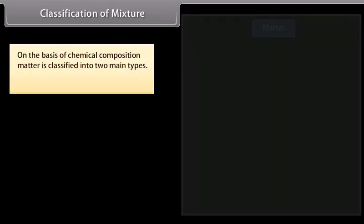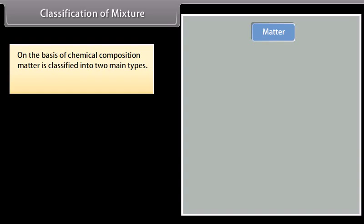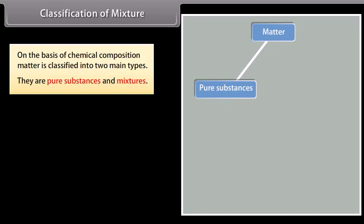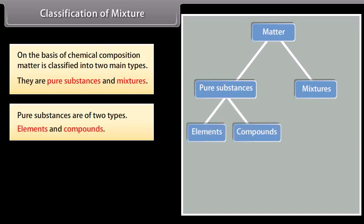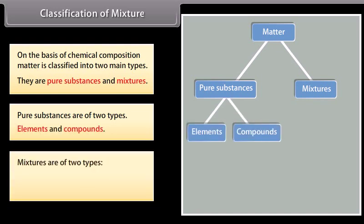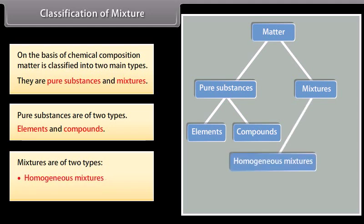Classification of mixture. On the basis of chemical composition, matter is classified into two main types: pure substances and mixtures. Pure substances are of two types — elements and compounds. Mixtures are of two types — homogeneous mixtures and heterogeneous mixtures.